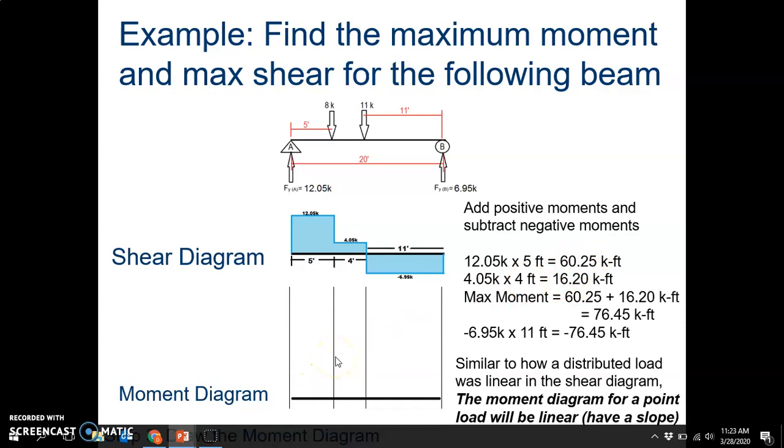Then I'm at 60.25, and I'm going to go up at a new slope. The slope is going to be the 4.05 right here, so it's going to be a lot less steep. I'm going to go up an additional 16.2. That'll give me 76.45 right here. Then because this is negative, I'm going to be going down. I'm starting at 76.45 and I'm going down 6.95 for each one foot I go. So I'm going to be going down a total of 76.45, which brings me back to zero. Let me show you what that looks like now.